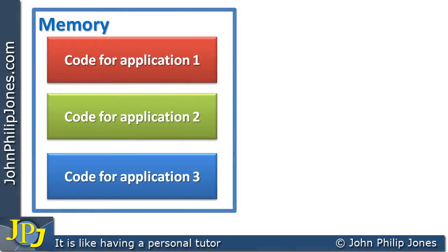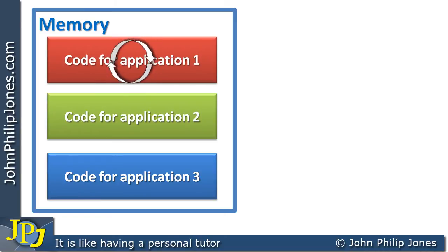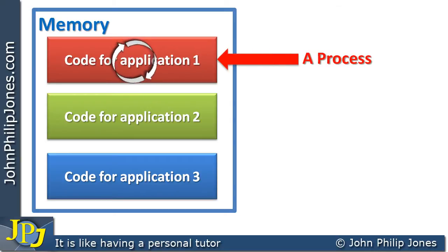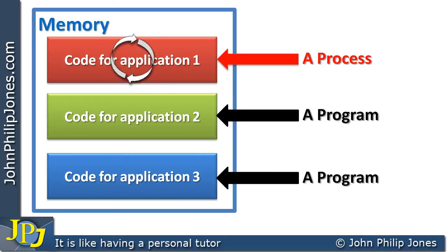Before we carry on, let's reflect back on some work we did in a previous video. Here we have the computer's memory and within it we have code for application 1, code for application 2, and code for application 3 — so we could have a spreadsheet, a database, and a web browser for example. At any instance in time one of these applications could have its code being fetched, decoded and executed, represented here with this spinning arrow set. When one of these is being fetched, decoded and executed it is referred to as a process, whereas the other two sitting in memory but not executing are regarded as being a program.